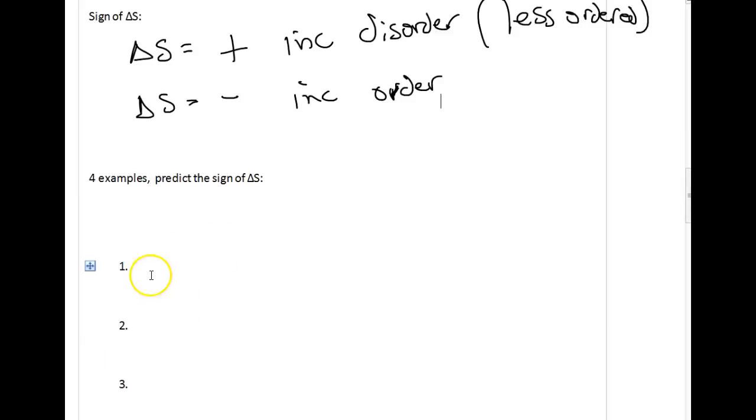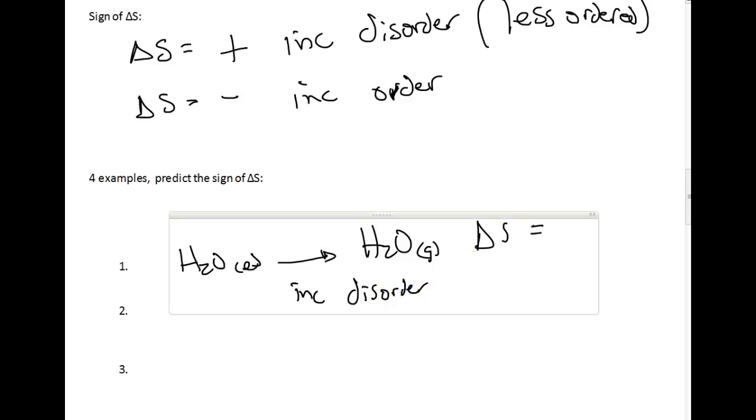I think if we get these four examples, we'll get a pretty good feel for what's going on here. So first example, let's take some, we'll take the water example again. H2O liquid turning into H2O gas. What would be the sign for delta H? Oh, excuse me. For delta S. Delta H would be our enthalpy. We want entropy. So going from a liquid, which has a little bit of disorder, but going to a gas, which is much more disordered. So we're increasing disorder. And to increase disorder, we say that the sign of delta S is going to be positive. We're becoming more disordered.